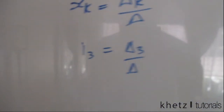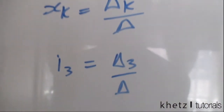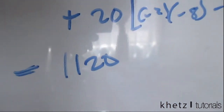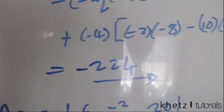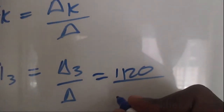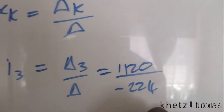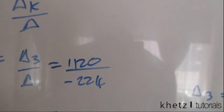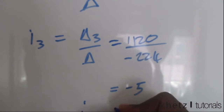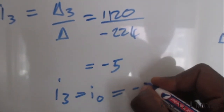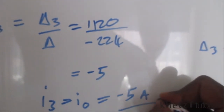Now we can solve the question. We have determinant three as 1120 and the determinant of the A matrix as negative 224. Dividing these gives negative 5. So I.3 equals I.O equals negative 5 amperes.